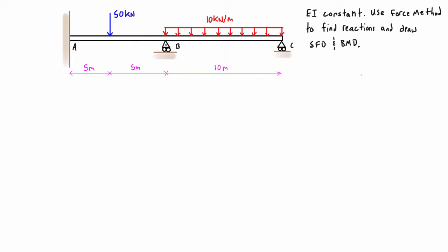First we do the method of superposition to remove the redundants, and then we also have to apply another method to find the magnitudes of these forces. That method could be the moment area method, double integration, or if you're lucky, tables — but often you don't have a standard enough system to use tables. So pretty much you'll always be using the moment area method or double integration method.